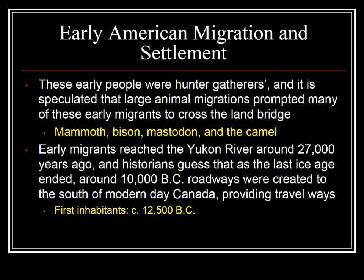These early people were hunter-gatherers, and it is speculated that large animal migrations prompted many of these early migrants to cross the land bridge. Because they weren't agriculturally-based people, they had to go where the food went. If the woolly mammoth, bison, or mastodon crossed the Bering Strait, then they went with them. The first Americans didn't come seeking religious freedom or new civilizations — they simply followed where the food went, migrating for basic survival purposes.